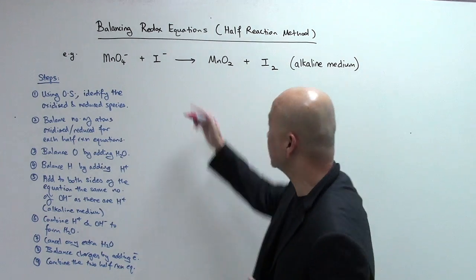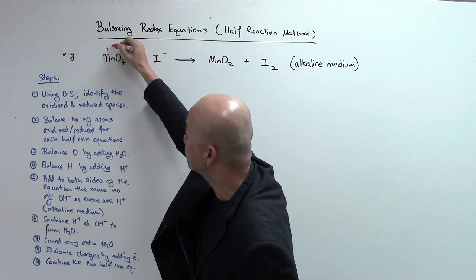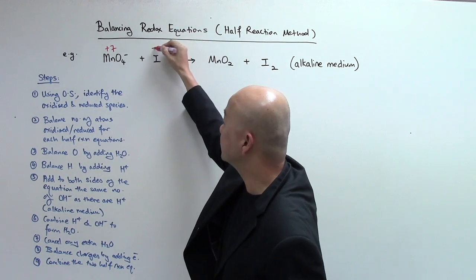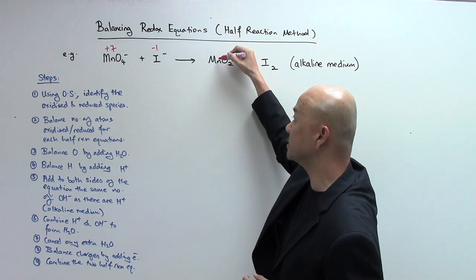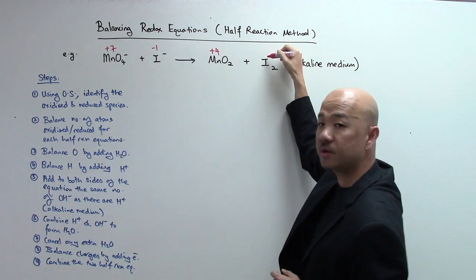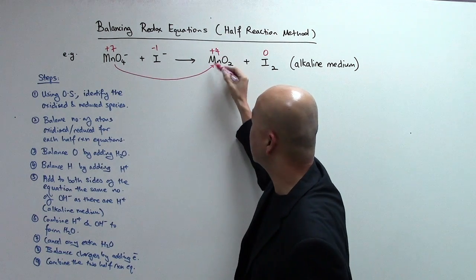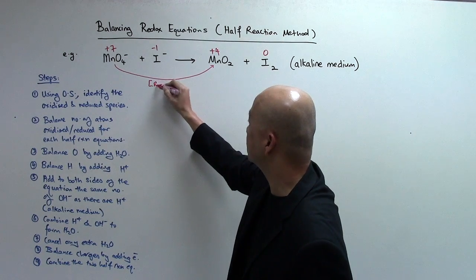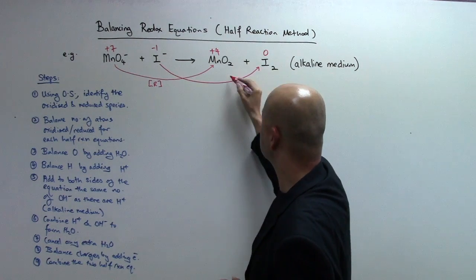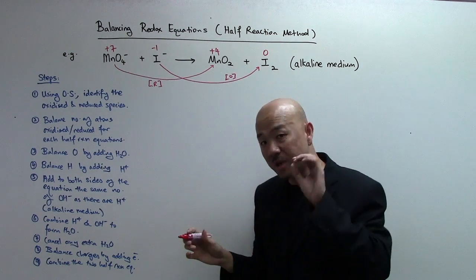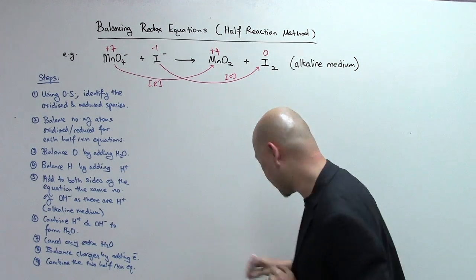Step one: find the oxidation state. For the permanganate ion MnO4-, manganese is +7. Iodide ion I- is -1. For MnO2, oxygen is always -2, so manganese is +4. For the free element I2, that's 0. So manganese goes from +7 to +4 — it has been reduced. I- goes to I2 — the oxidation number increases — so this has been oxidized. We now have a reduction and an oxidation half reaction in mind.